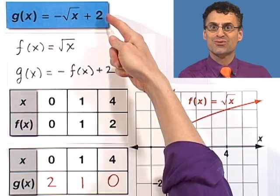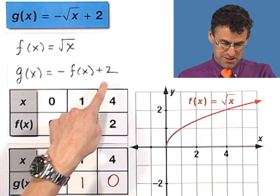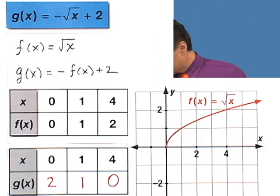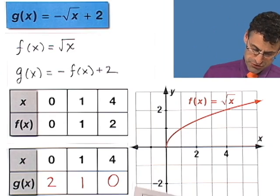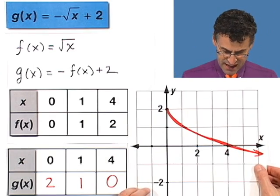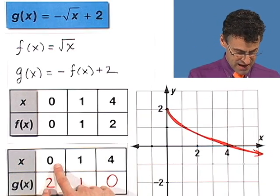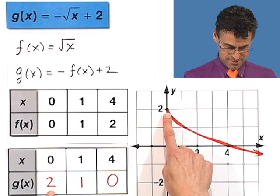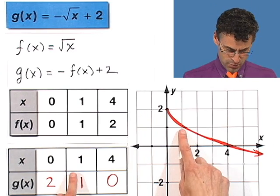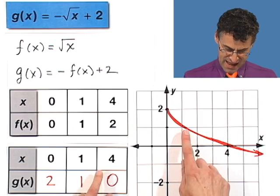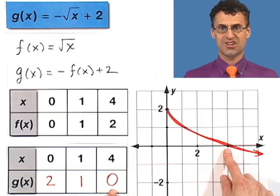Again, I never even went back to the original function. I just used these different transformations, in this case a reflection over the x-axis and a vertical translation of 2 units up, and check it out. It conforms. At 0, we're at 2. Bang! At 1, we're at 1. Bang! And at 4, we're at 0. It checks.